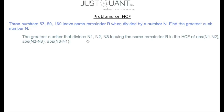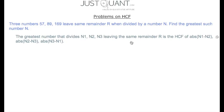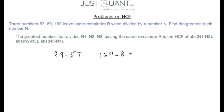To solve this kind of problem, we use the following property: the greatest number that divides n1, n2, n3 leaving the same remainder r is the HCF of |n1−n2|, |n2−n3|, and |n3−n1|. In this case, we calculate the HCF of (89−57), (169−89), and (169−57).